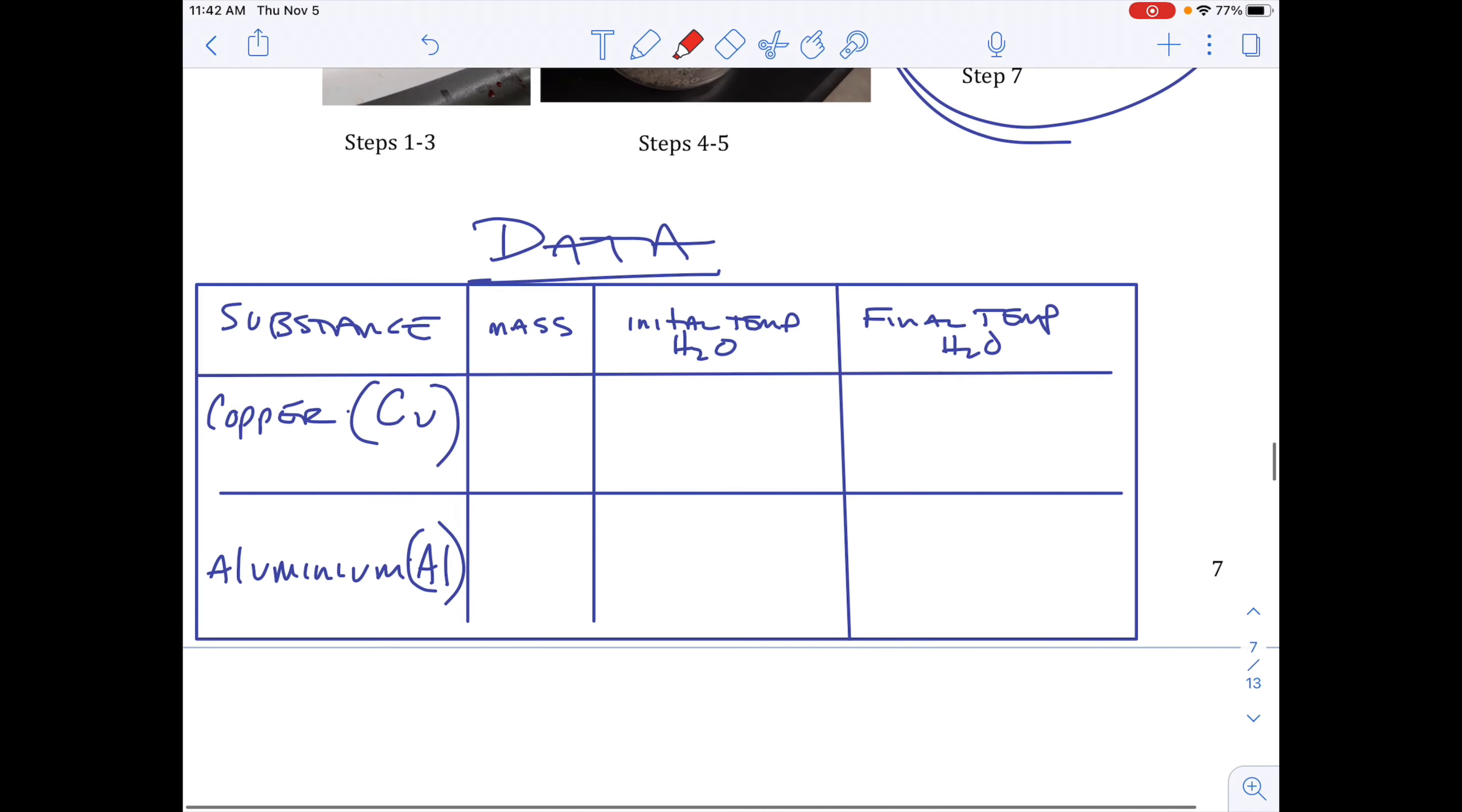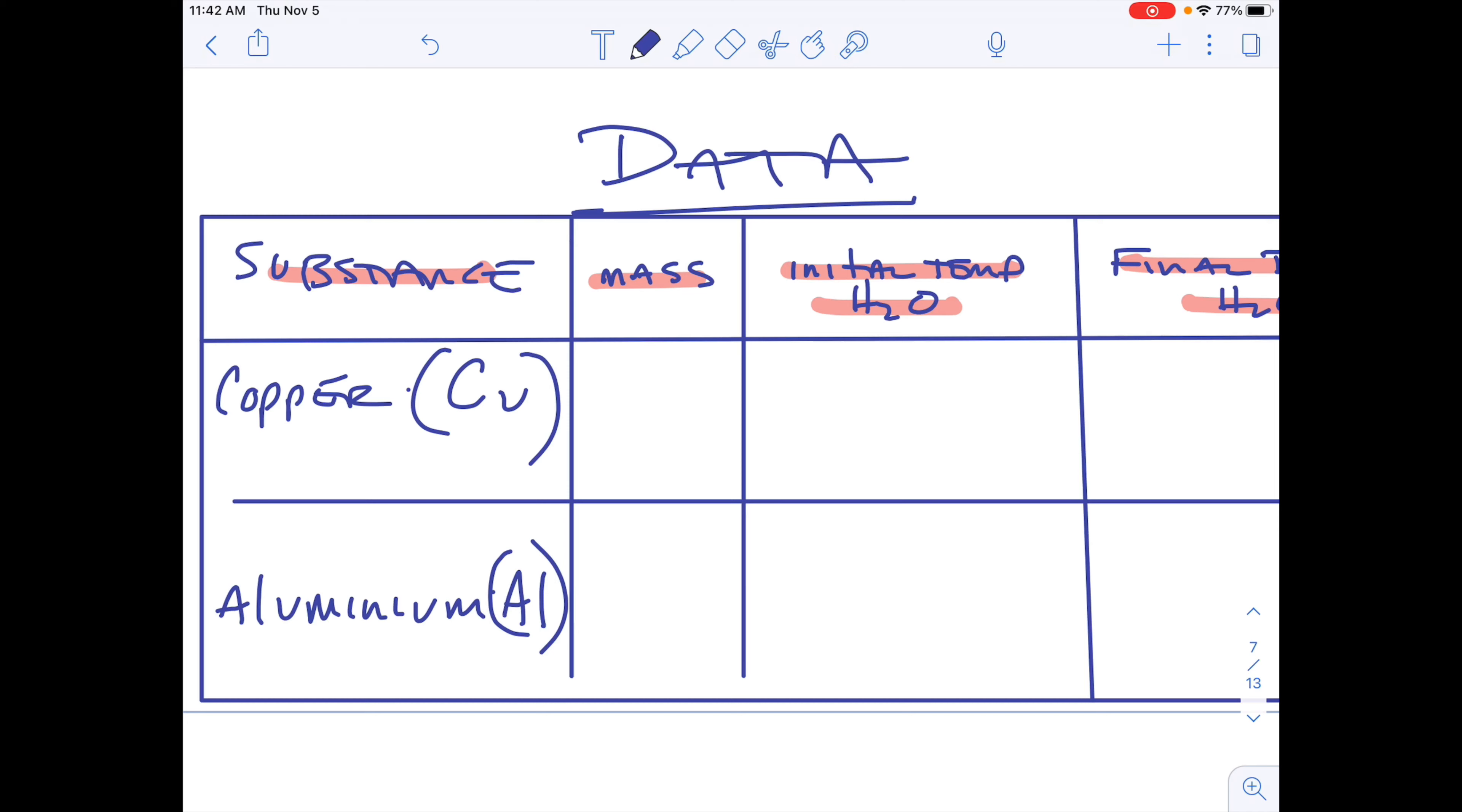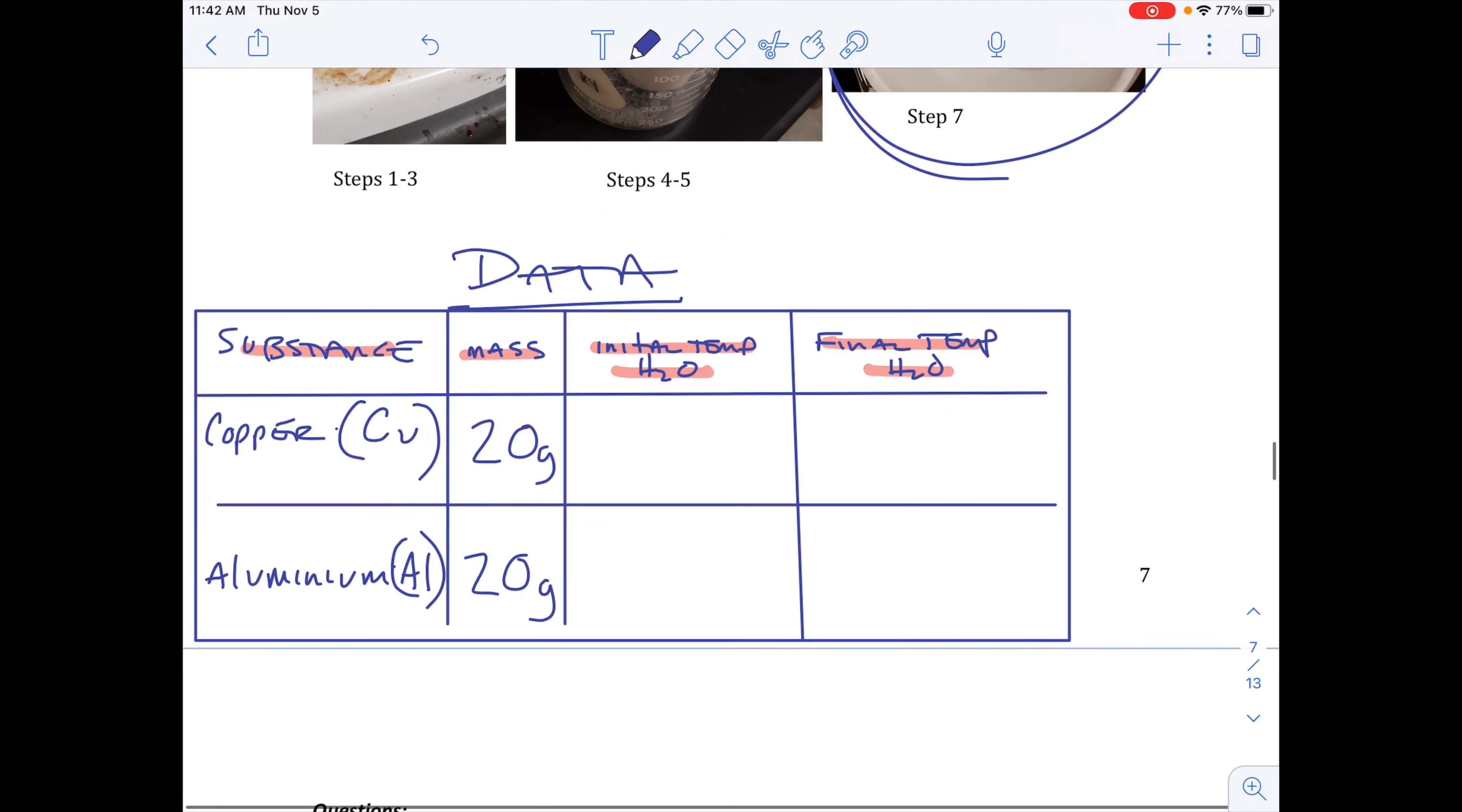I've made a data table. I have substance, mass, initial temperature of water, final temperature of water. We can fill a couple of these things in now and we'll come back to the rest of them later. So we have mass of the copper is going to be pre-measured 20 grams, mass of aluminum, pre-measured 20 grams. And the rest of this we can come back and fill in later.